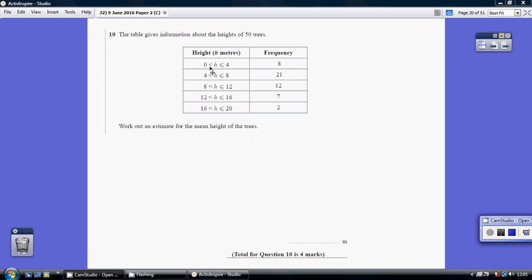Now, 8 trees' height is between 0 metres high, well, greater than 0, it's got to be something, but less than or equal to 4 metres. So somewhere between 0 and 4 metres. These 21 trees are somewhere above 4, up to and including 8 metres. Now, how high exactly these 8 trees are, we don't know.